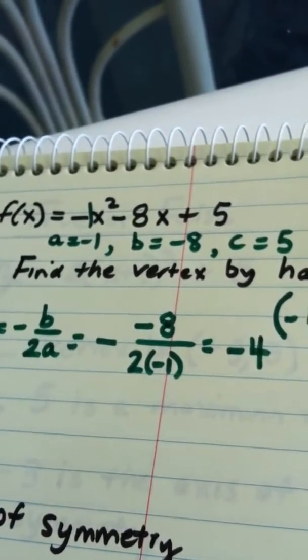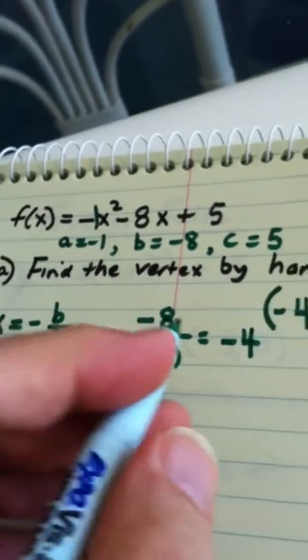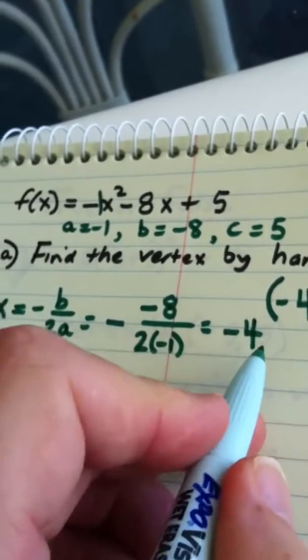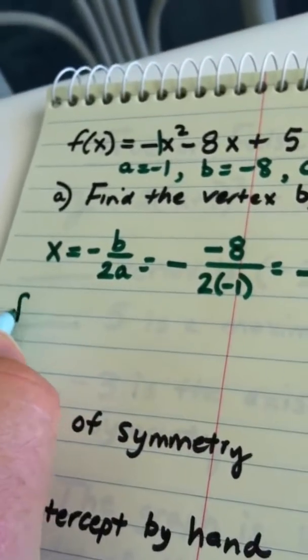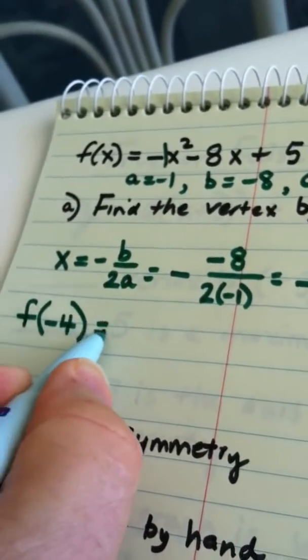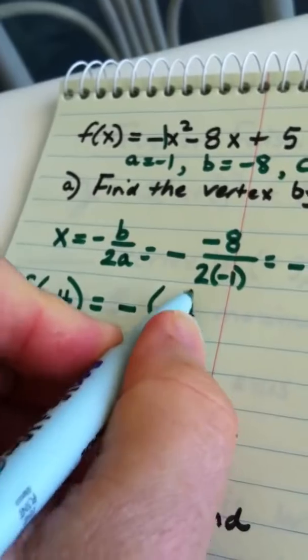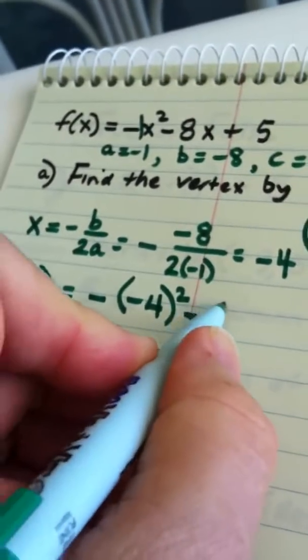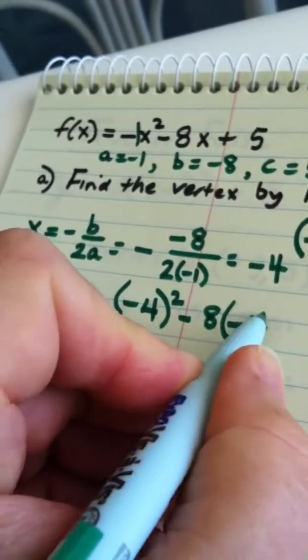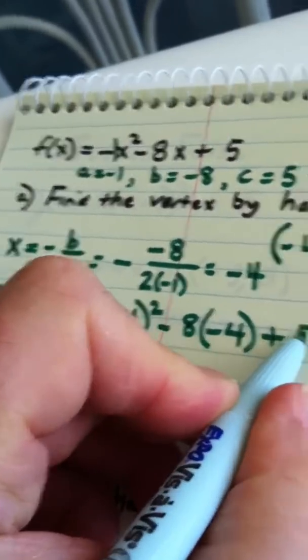Alright, now to find the y-coordinate, we plug this into the function. We find f of negative 4. That would be the opposite of negative 4 squared minus 8 times negative 4 plus 5.